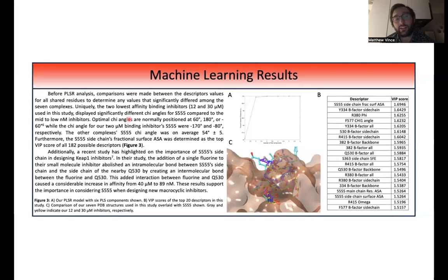This residue is actually very interesting in that when I was doing the simple comparison analysis at first, I noticed that within my seven complexes, I have two low affinity micromolar binders compared to the other five complexes, which are around mid to low nanomolar ranges. And I noticed that for the chi angle for the Serine 555, the low affinity binders, the two micromolar binders, were actually very different from the rest of the other five PDB structures.